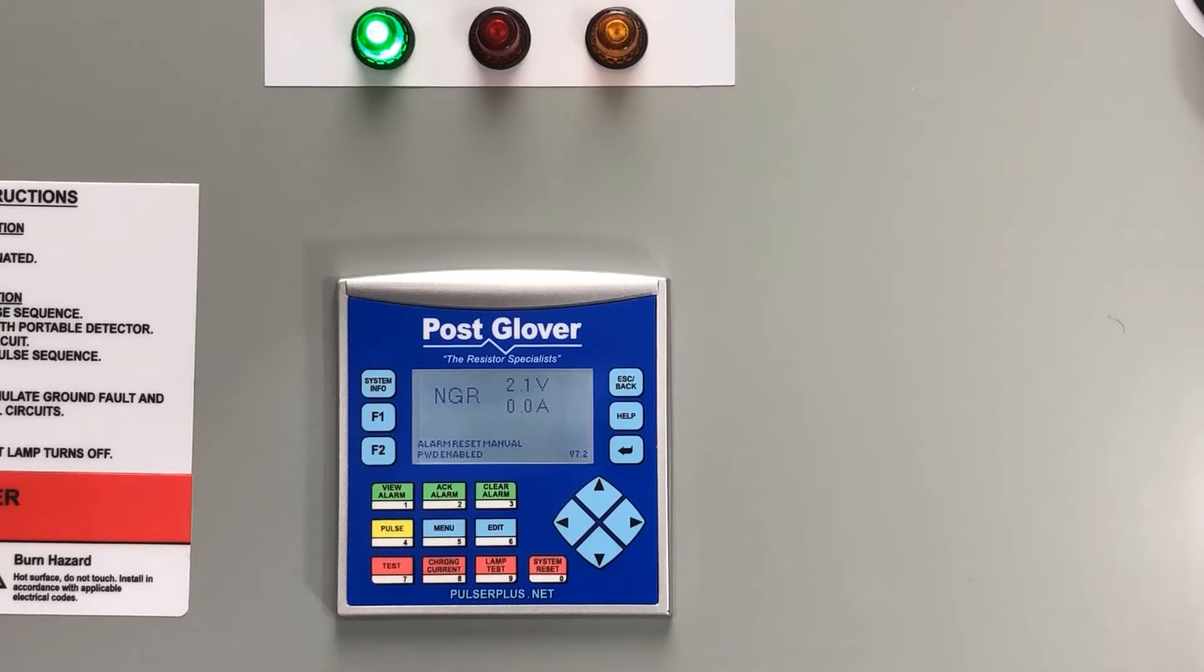This should be done at regular intervals to ensure that the lights are working correctly so that you know when certain events are happening or functions are occurring. For instance, you want to run a lamp test prior to performing a ground fault test to ensure that the proper indicators will be illuminated when performing the ground fault test.